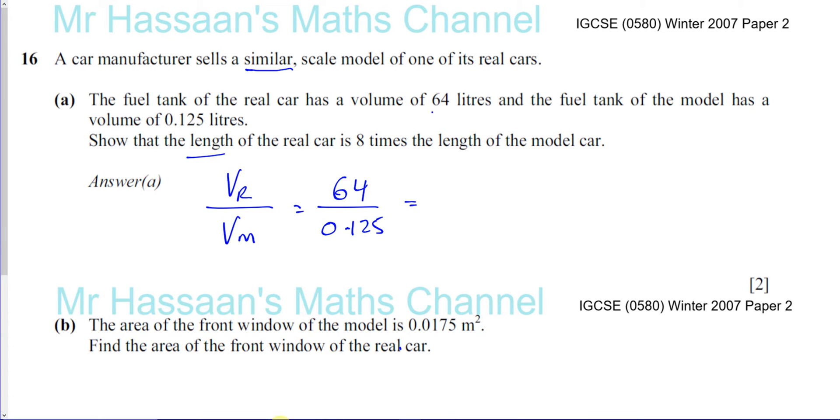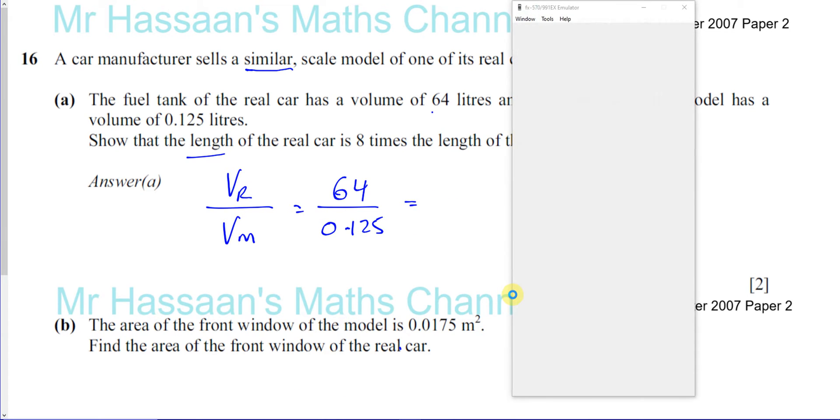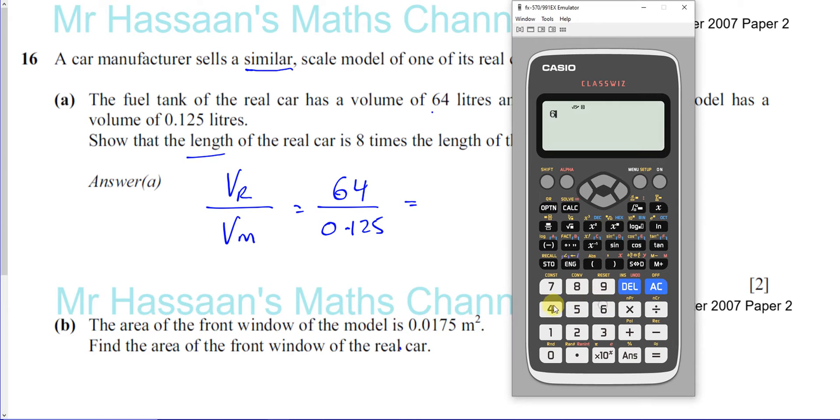Now if you work out what that is going to be, 64 divided by 0.125. Actually 64 divided by 1 eighth, so it's going to be 64 times 8, which is 512.